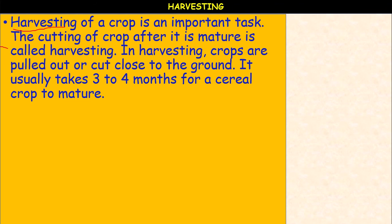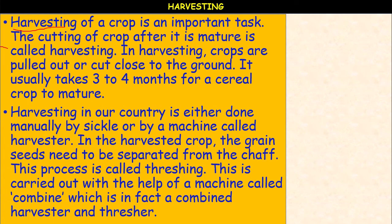Nowadays we are using mechanization of agriculture — we are using machines. The harvesting in our country is either done manually by sickle or by a machine called a harvester. In the harvested crop, the grain seeds need to be separated from the chaff; this is called threshing. This is carried out with the help of a machine called a combine — a combined harvester and thresher — so two works are done at a time: harvesting and threshing.